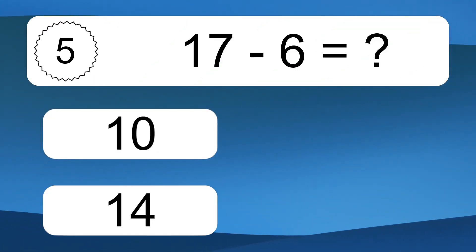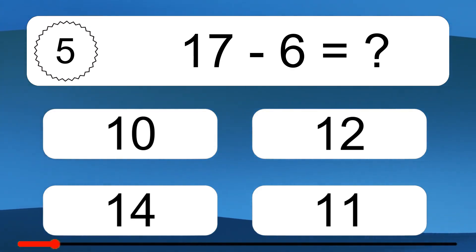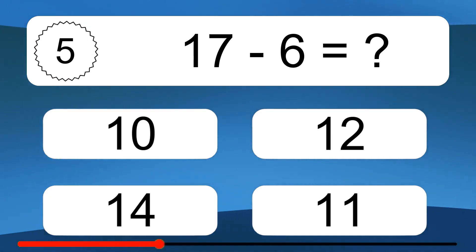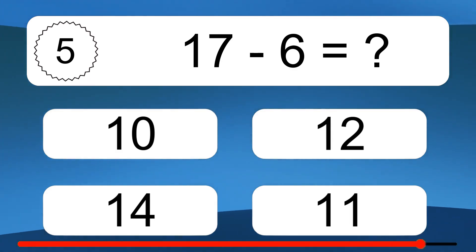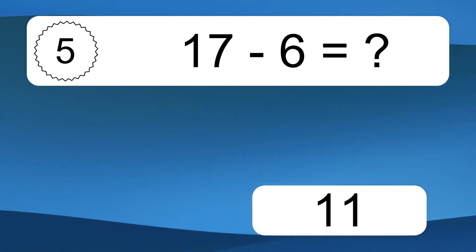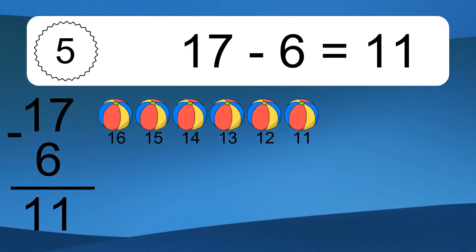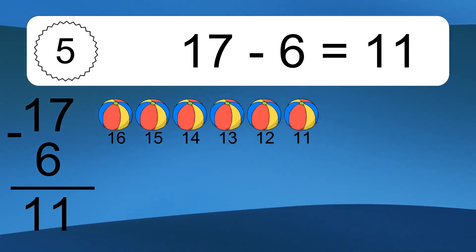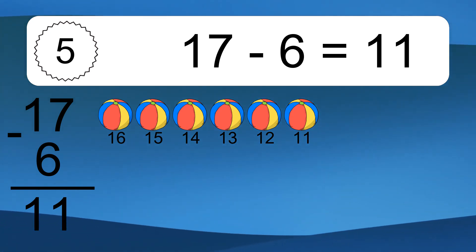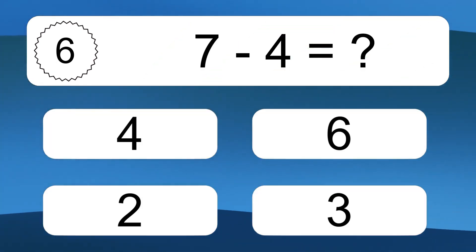17 minus 6 equals what? 17 minus 6 equals 11. Let's count it: 16, 15, 14, 13, 12, 11.